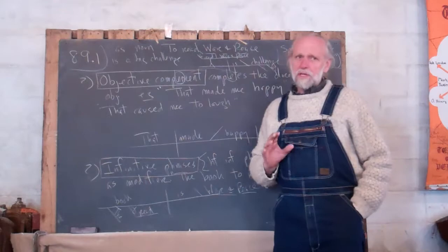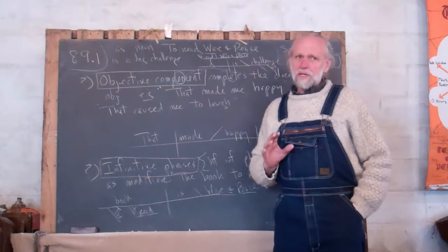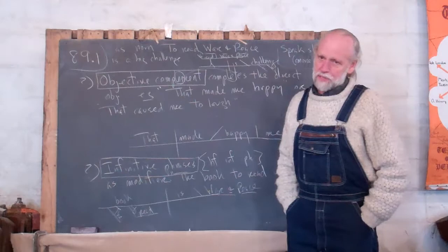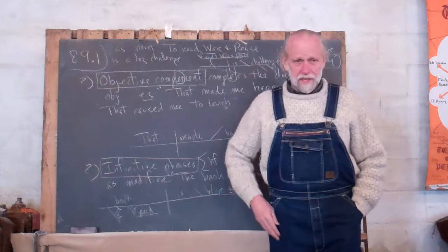Objective complements only occur with a select number of verbs. They're a little bit like indirect objects that way. And it seems to me that they usually have something to do with causing. The example that comes to my mind the quickest is, the sun made the tomatoes red.